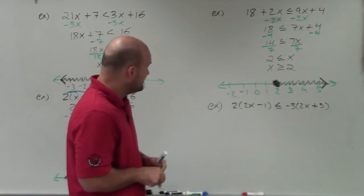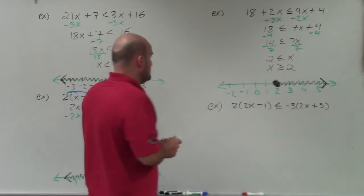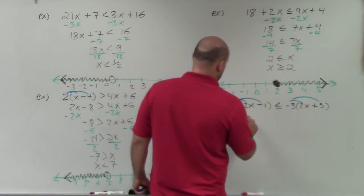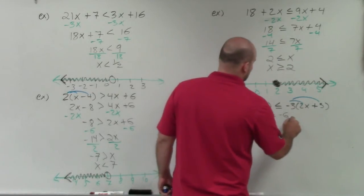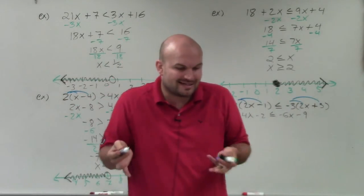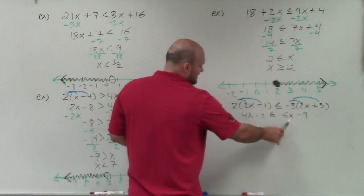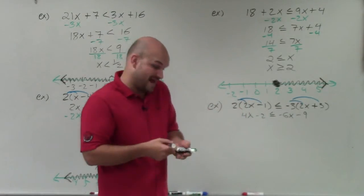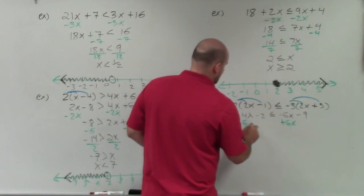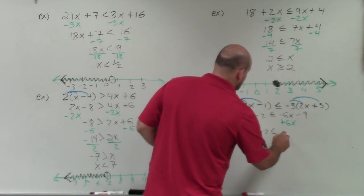In this last example, I have parentheses on both sides. Before I can get my variable to the same side or use inverse operations, I have to simplify both sides first. So I apply the distributive property to both of them. By doing that, I obtain 4x minus 2 is less than or equal to negative 6x minus 9. We have a negative variable on the right, but as I mentioned, we have options — we don't have to divide by a negative. If I add 6x to both sides, I'll eliminate the variable on the right-hand side and have a positive variable on the left. So that's what I'm going to do — add 6x on both sides. I'm now left with 10x minus 2 is less than or equal to negative 9.